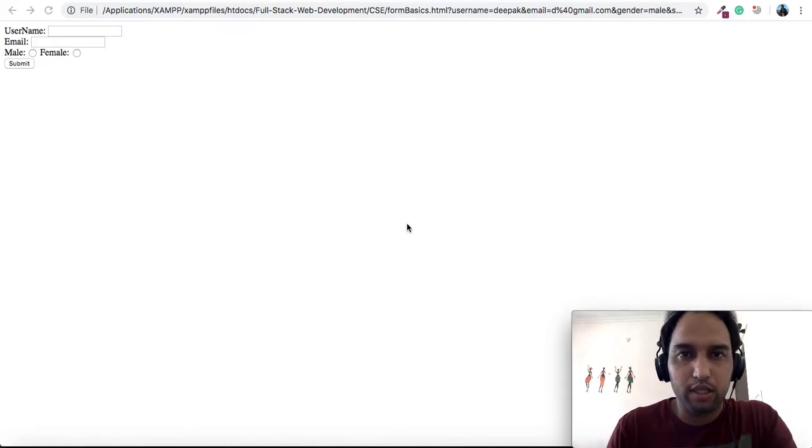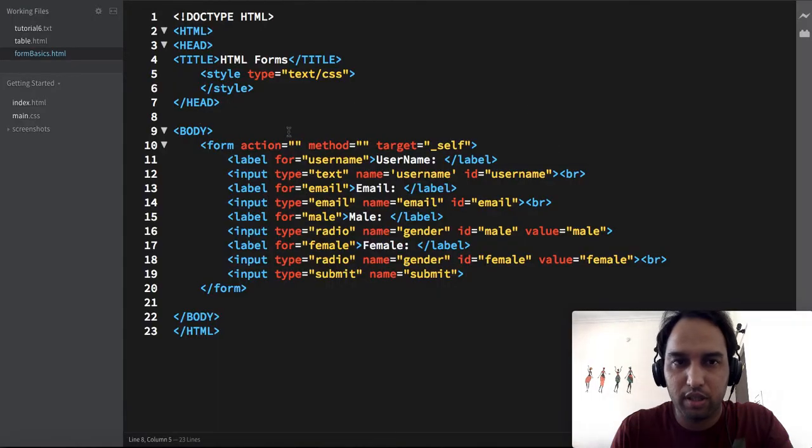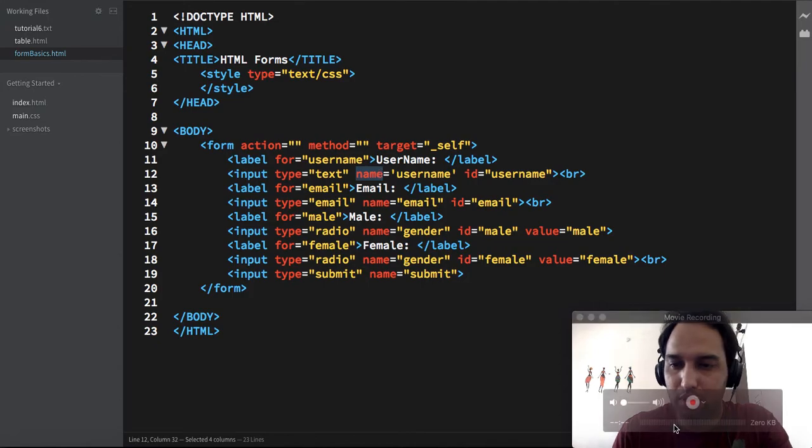Hello everyone, welcome to our next lecture in full stack development. In this lecture, we are going to discuss about a form and its multiple attributes like action, method, and a short introduction of the name attribute.